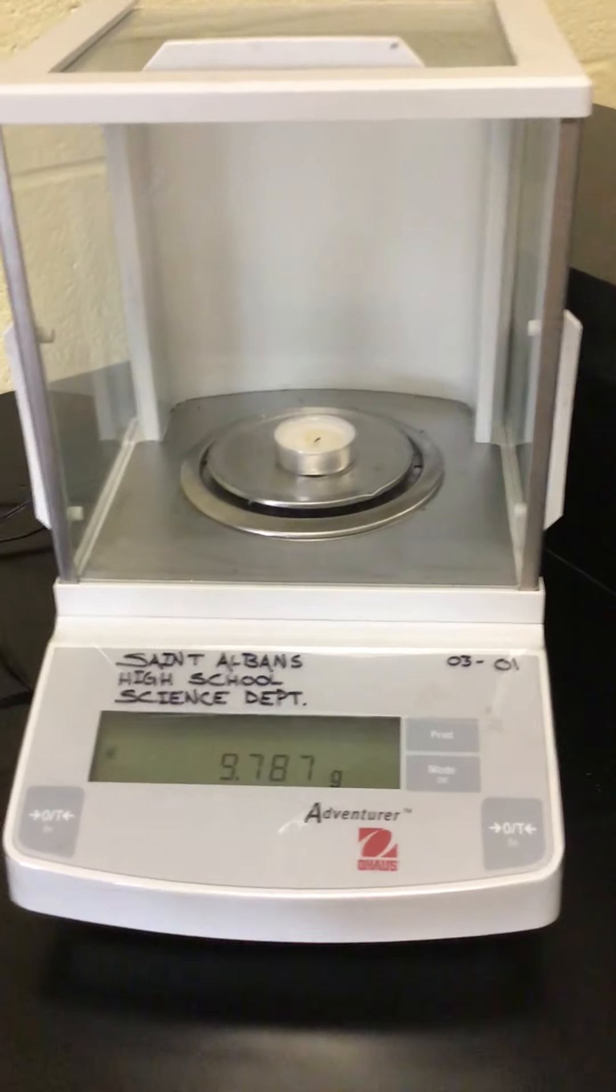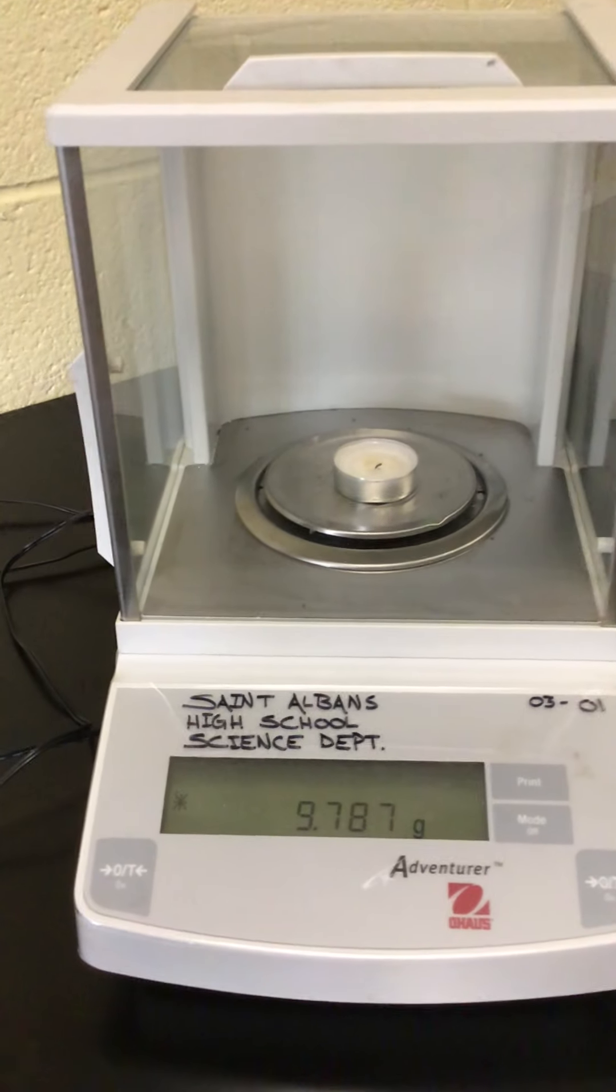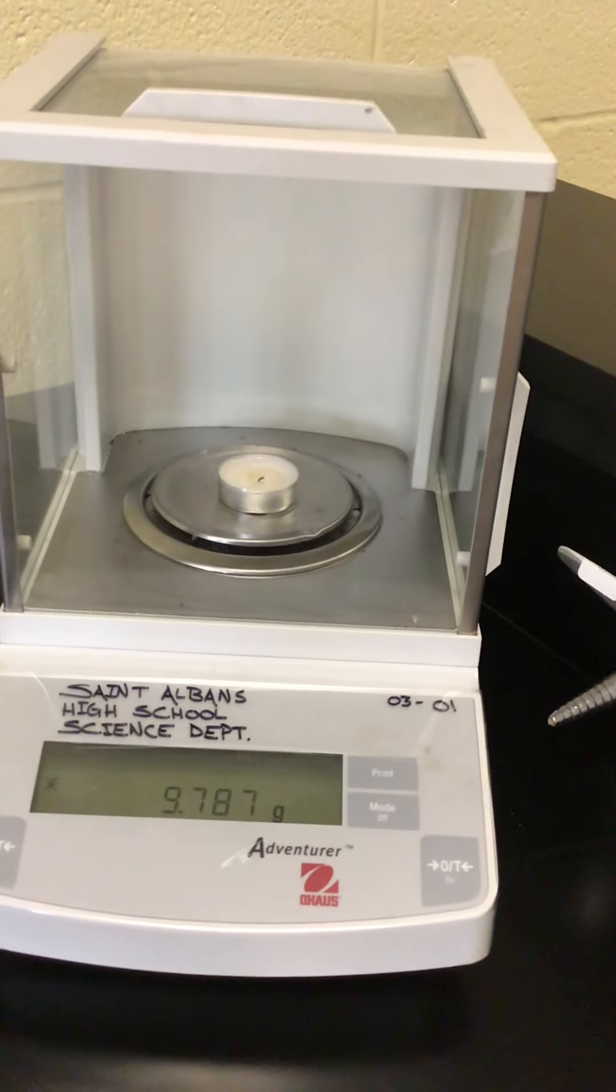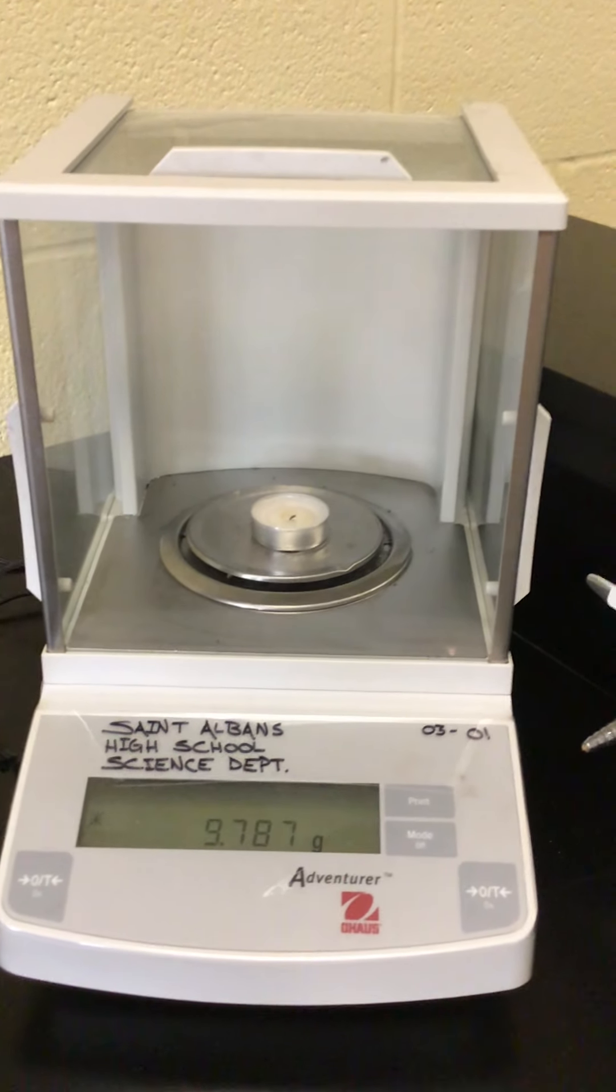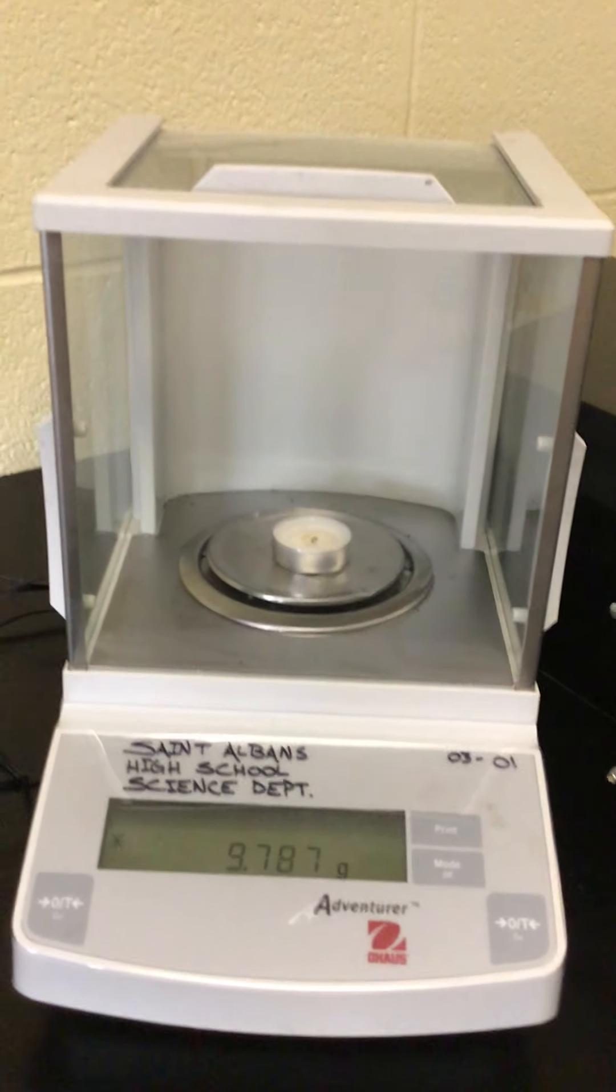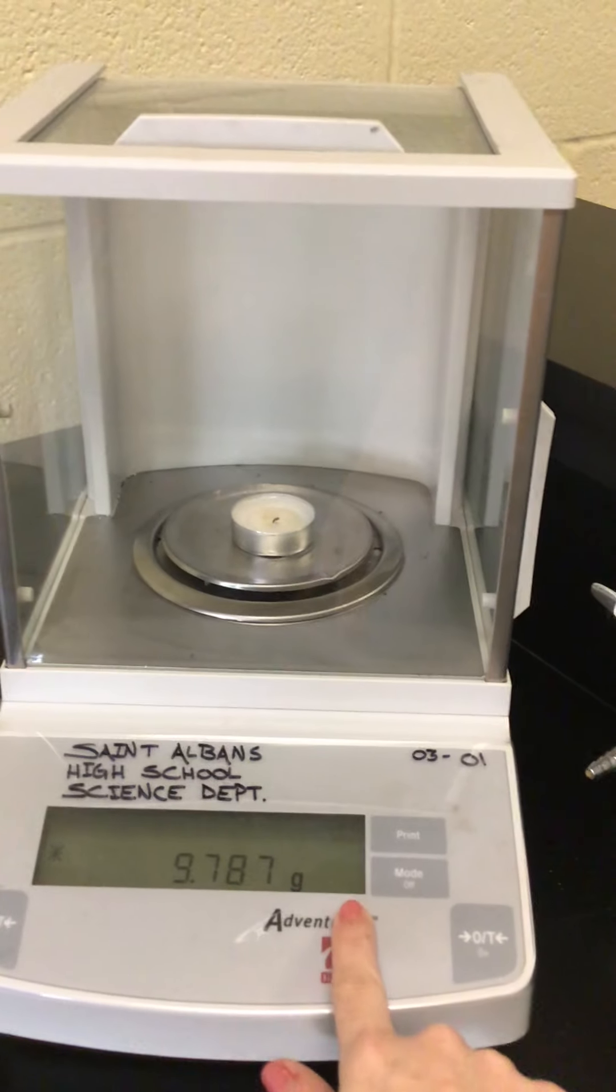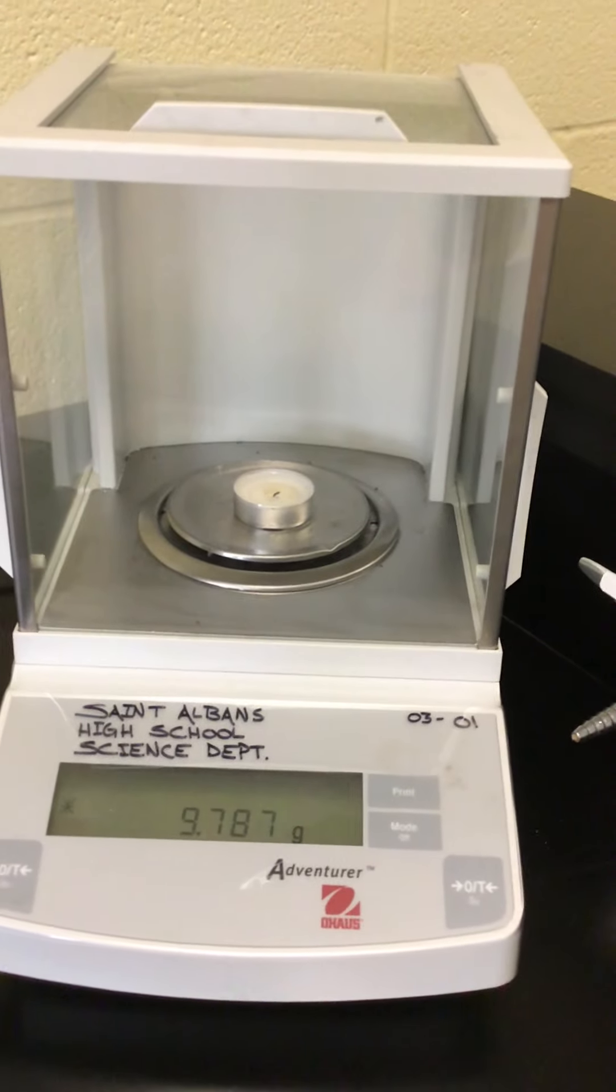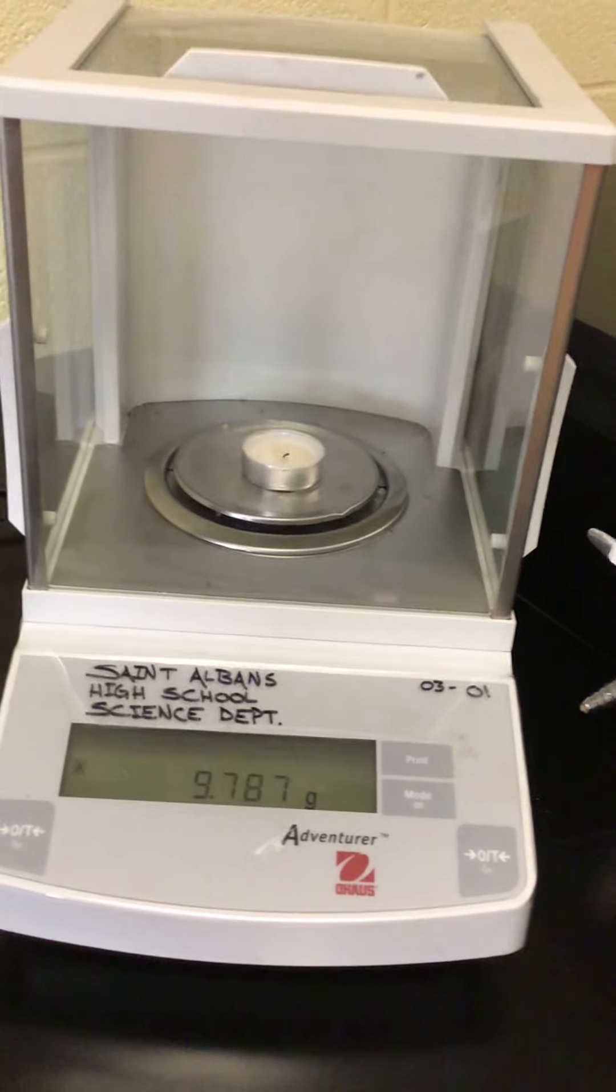Now this last digit right here is what we would call an uncertain digit for sure because it could be 9.7865 that's just rounding up to that last digit of a 7. So for this reason when we use a scale we always want one that goes one digit at least past the digit that we want.